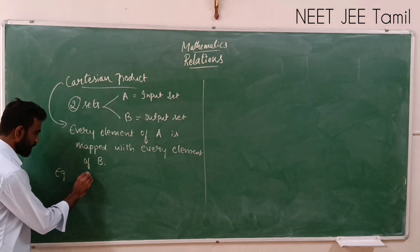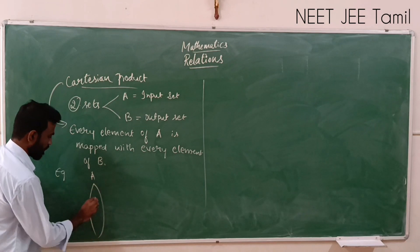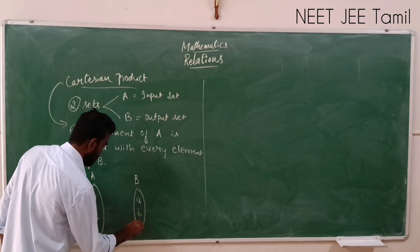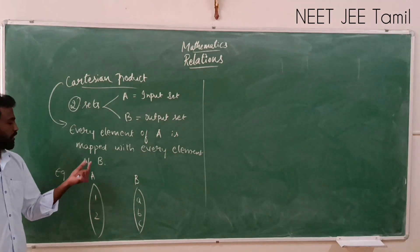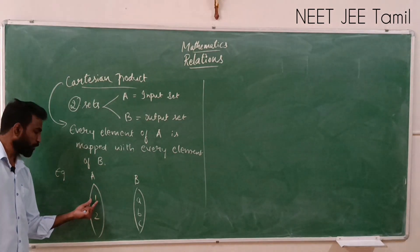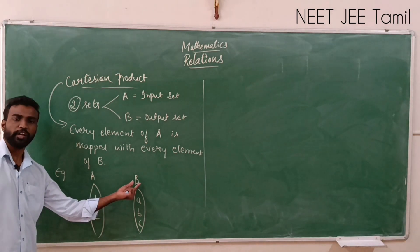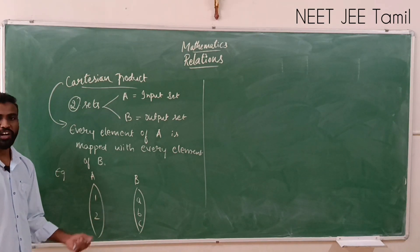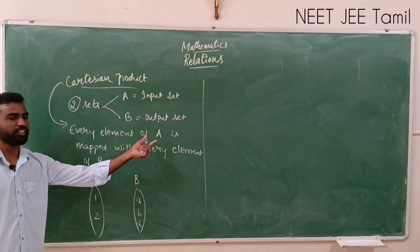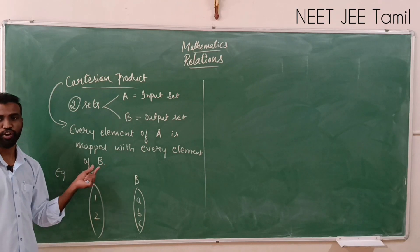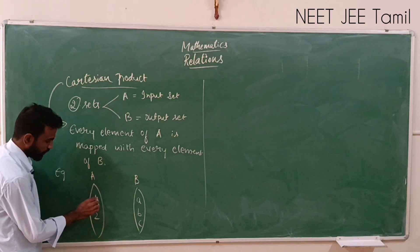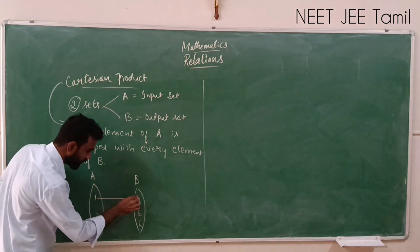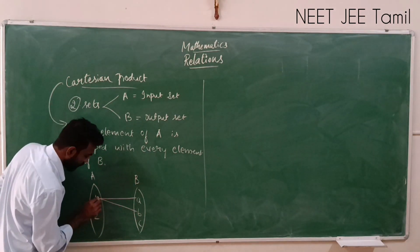Let me take an example. Set A contains elements 1 and 2, and set B contains elements A, B, and C. According to Cartesian product, every element of A is mapped with every element of B. So the first element of A, which is 1, is mapped with A, 1 is mapped with B, and 1 is mapped with C.